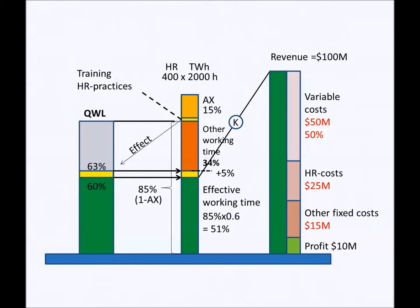In this case, it means that the quality of working life improves from 60% to 63%. Because the quality of working life index determines the effective working time share, there will be an equal 5% improvement at the effective working time. In a growing business environment, the company can utilize the K-factor in making more revenue. When revenue increases, the variable costs are increased as well.